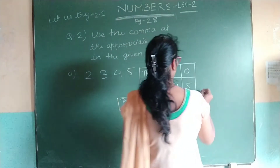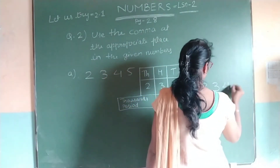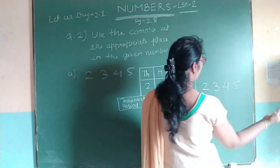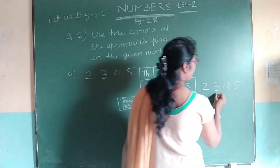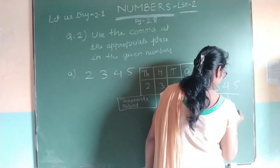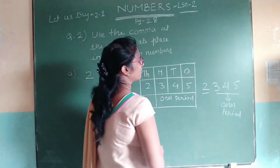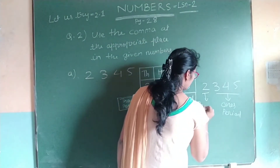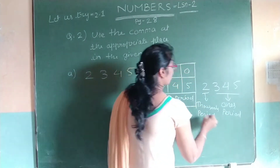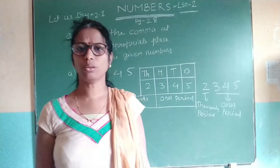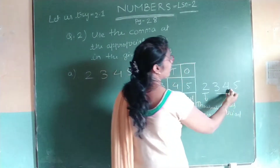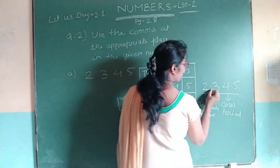Now we will see where to place the comma. Let us write the number again. From your right-hand side, count 3 places — that is 1s, 10s, and 100s — which form the 1s period. You are supposed to insert the comma between the 2 periods, so from your right-hand side count 3 places: 1s, 10s, and 100s, then insert the comma here.